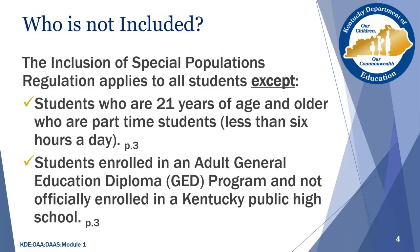Most all students are covered in this regulation in some way. However, there are some groups of students that this regulation does not represent. Those are students who may age out at 21 years of age or older, students who are considered part-time and may be enrolled in a Kentucky public school six hours or less per day, and students who are enrolled in a general education program or GED that is not part of the Kentucky public school system.